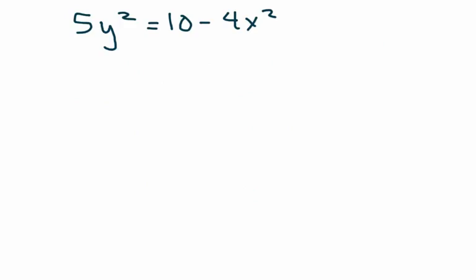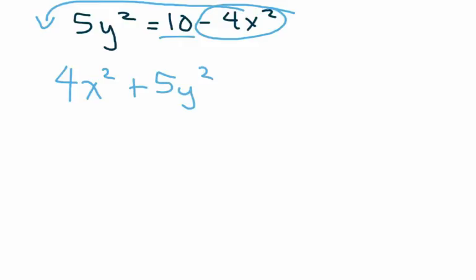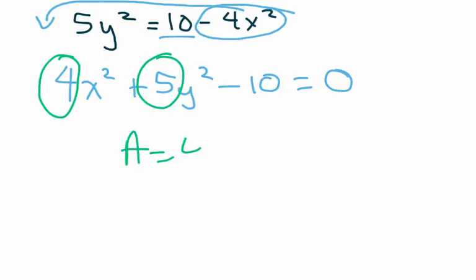All right, and in this case I'm going to group things together. I always put my x first because that goes with the A. So 4x² + 5y². I'll go ahead and move ten over equals zero. My A is four, my C is five. A does not equal C, however they're both positive, so this is an ellipse.